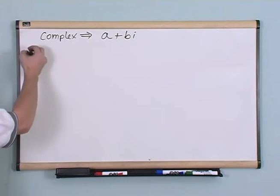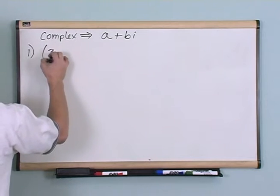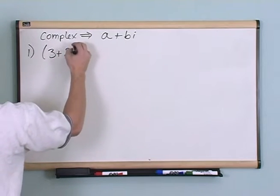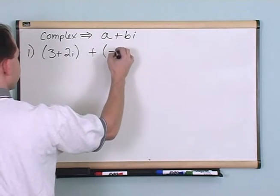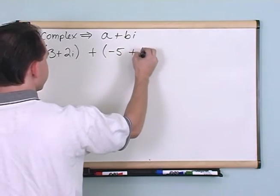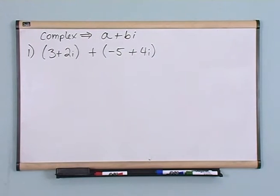So let's do a couple problems and see where we can go. Let's say we had a complex number, 3 plus 2i, and we're going to add it to another complex number, negative 5 plus 4i. How can I do that?